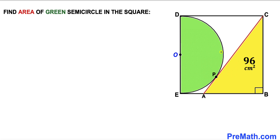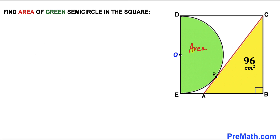Welcome to pre-math. In this video we have got a yellow right triangle ABC and a green semicircle fully inscribed in a square EBCD, such that they are tangent to each other at point P. Moreover, the area of this yellow triangle is 96 centimeter square, the center of the semicircle is O, and our task is to calculate the area of this green shaded semicircle.